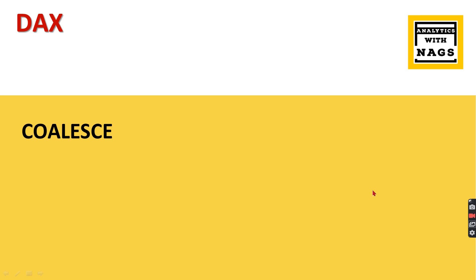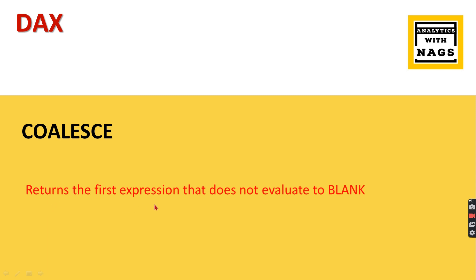Welcome to Analytics with Nags. In this session we are going to see a DAX function named COALESCE. If you are familiar with SQL, you already know what it does — it returns the first expression that does not evaluate to blank. Consider you have three expressions; they are evaluated from left to right. If the first expression returns non-blank it is returned, otherwise it checks the next expression.